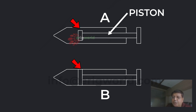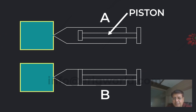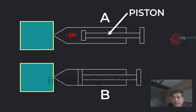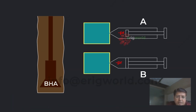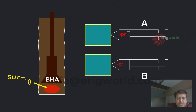In syringe B, there is no gap between piston and cylinder. Now, if I pull the piston outward with fluid outside the syringe, behind the piston there will be a negative pressure created — a suction force. The same thing happens in B: there will also be a suction force. Similarly in the wellbore, when I make an upward movement of the string or pick up the string, a negative pressure — a suction force — is created.